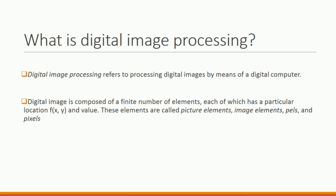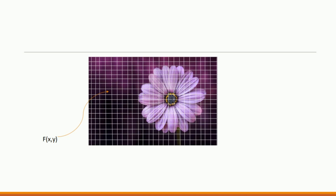A digital image is composed of a finite number of elements, each of which has a particular location and a value. These elements are called picture elements, image elements, pels, and pixels. Here we can see that this image is divided into a set of elements called picture elements — divided into cells — and each cell has its position value X, Y and an intensity value.